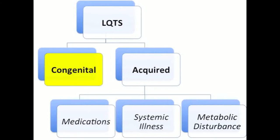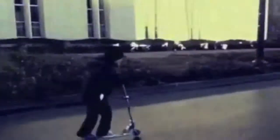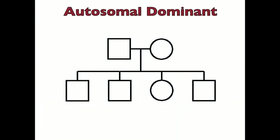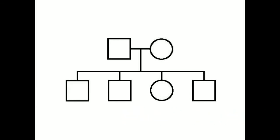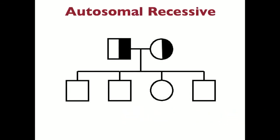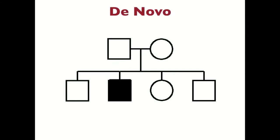Long QT Syndrome can be either congenital or acquired. The main focus of this video will be on congenital LQTS. It is important to recognize that there are also acquired forms of the disorder, caused by a variety of conditions, most commonly medications, systemic illness, and metabolic disturbances. Congenital Long QT Syndrome is an inherited condition that occurs in roughly 1 in 2,500 individuals. Most forms are autosomal dominant, meaning that a person with the condition has a 50% chance of passing it on to their children. There is a rare autosomal recessive form, in which an abnormal gene is passed on from both parents. It should be noted that over 10% of LQTS cases arise from de novo mutations.